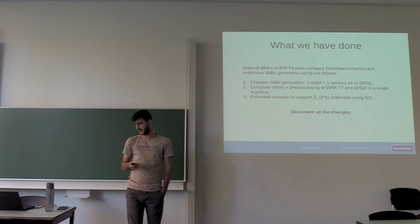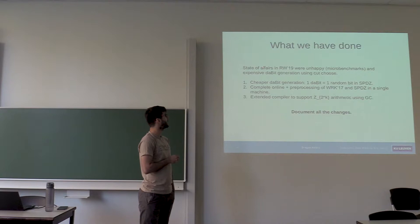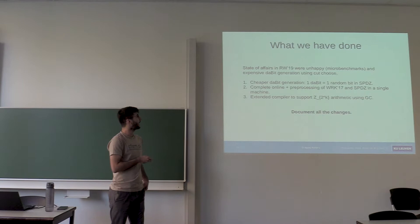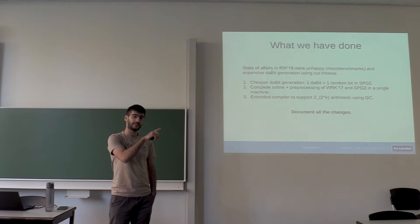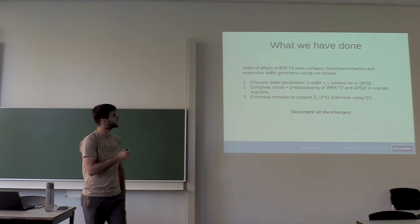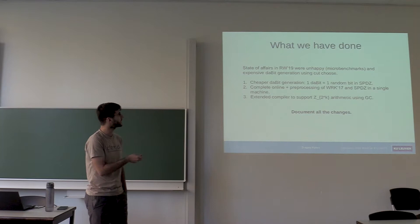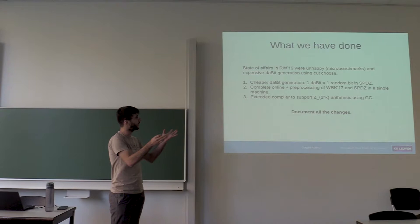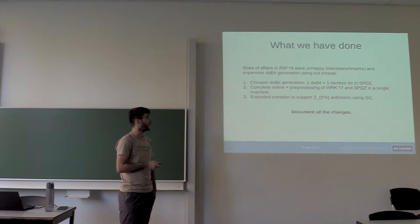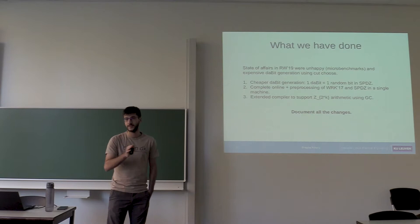What we do in this paper is clean up lots of work from the previous paper, because the previous paper had a lot of micro benchmarks. This time we have the whole system integrated together, and we devised a method to have even cheaper pre-processing. The pre-processing required to switch between these two engines is called a double authenticated bit, also dubbed a DABit. We reduced the DABit cost to around five times faster than the previous work. We also integrated all this work and extended the compiler of SCALE to support arithmetic in Z^k using garbled circuits. Very importantly, we document all the changes.